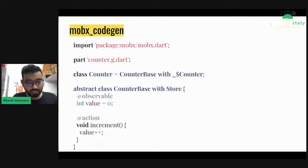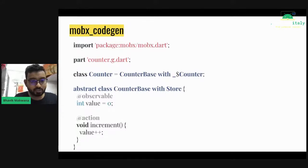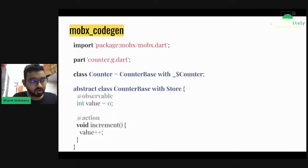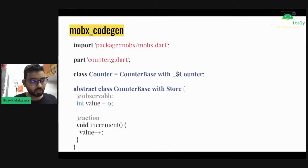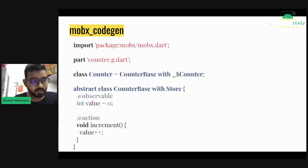Whenever the increment method is called, it will update the value of our observable named value. There's some boilerplate code like the part file and class declaration, but it is fixed for every class. I've also created a live template for Android Studio — you can just write 'store' on one line and all the boilerplate code will appear, meaning there's even less boilerplate to write.